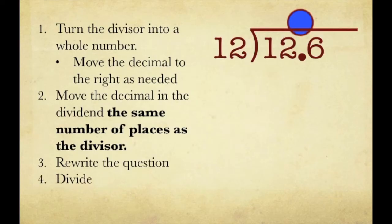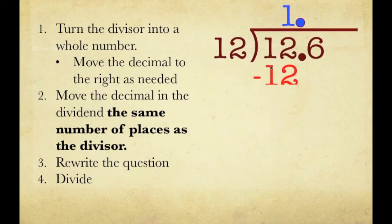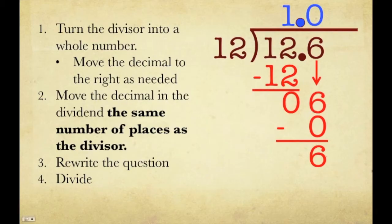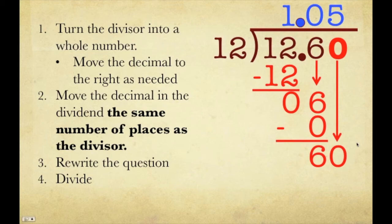Step 4 is to divide, and we bring the decimal straight up top. How many times does 12 go into 12? One time. That's 12, subtract that, we get zero. Bring down our 6. How many times does 12 go into 6? It can't — it's too big. So we put 0 times. We still have 6 remaining, so 6 minus 0 is 6. We annex a zero because we still have to get rid of the 6. Bring down our 0, and now we have 60. How many times does 12 go into 60? That's 5 times. 5 times 12 is 60, subtract that, we get 0. Our final answer is 1.05.